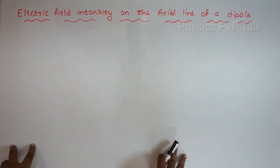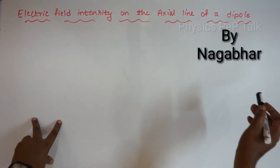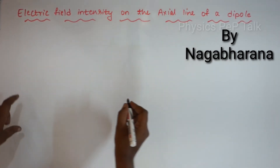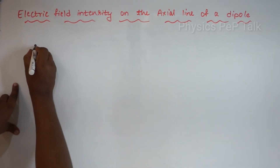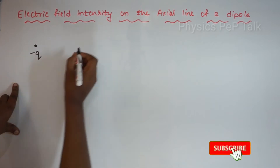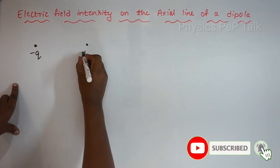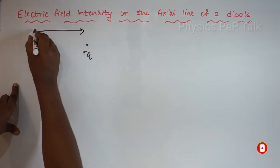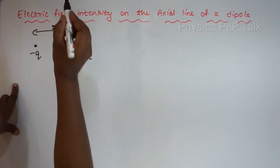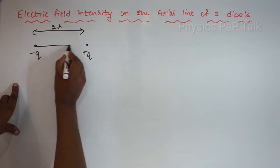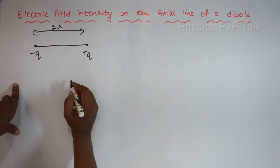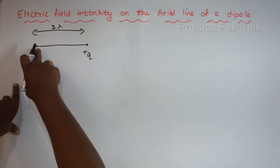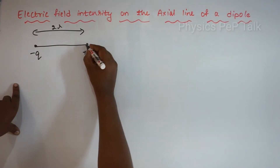Electric field intensity on the axial line of a dipole. First, consider a dipole — a positive and negative charge separated by a very small distance 2L. This will be the axis of the dipole, which is the line joining the two charges.